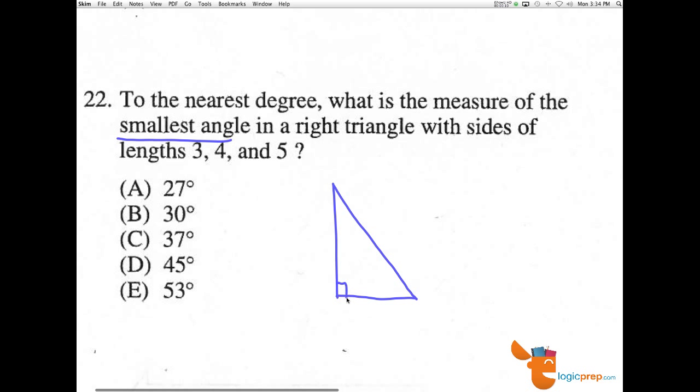So we know it's a right triangle, a 3-4-5. They want the smallest angle, and the smallest angle will be opposite the smallest side, 3. So we'll call this angle x.